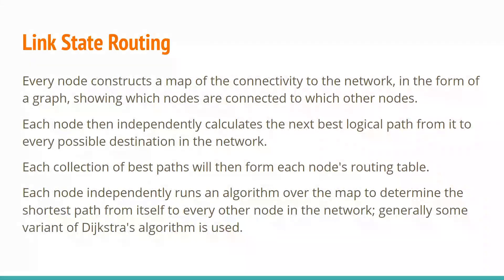It maintains link state information in a way that it can reliably transfer that information between routers with the help of multicast messages sent across. We'll get into detail about what addresses they're sent to, but at a higher level, link state routing is all about constructing a topology or map.